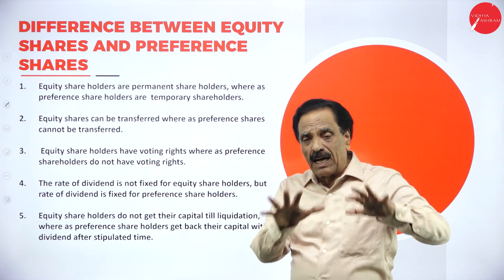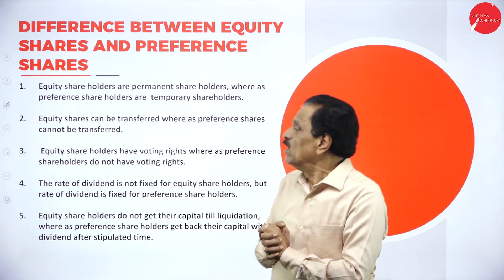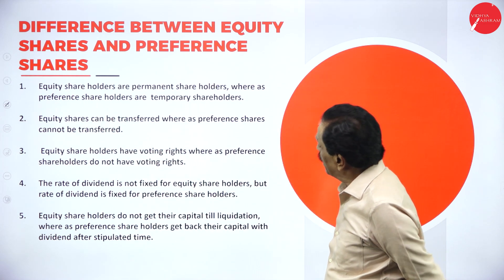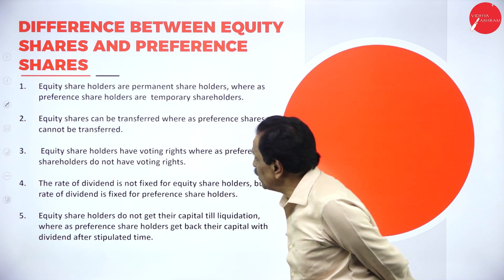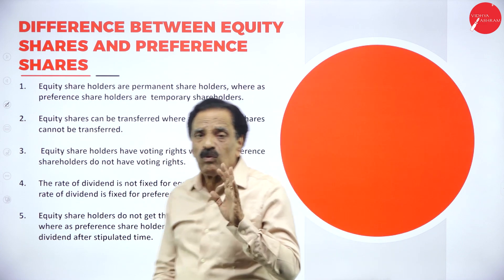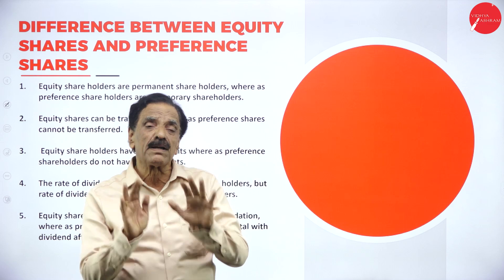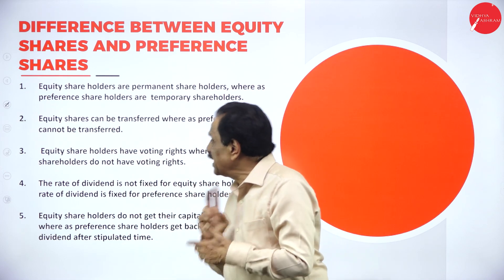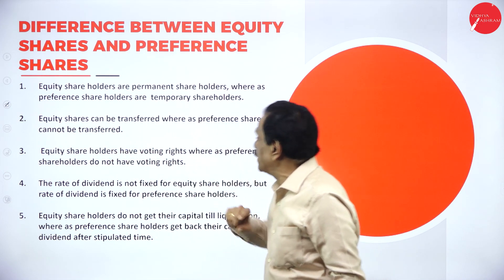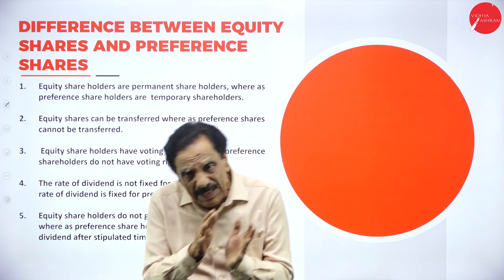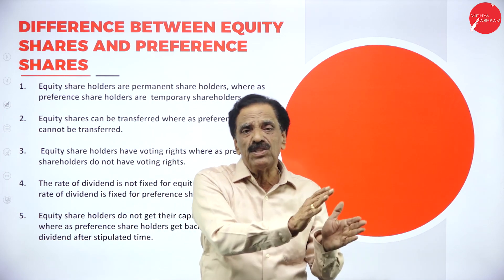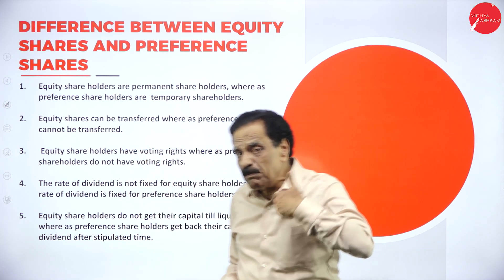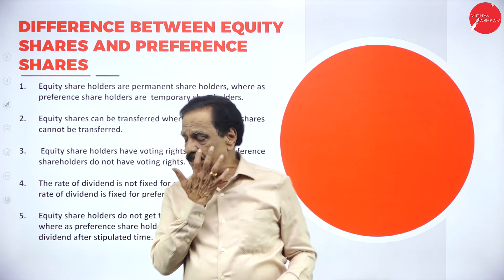Now, the differences between equity share and preference share. First difference: equity shareholders are permanent shareholders, whereas preference shareholders are temporary shareholders. Second difference: equity shares can be transferred from one shareholder to another shareholder, but preference shares cannot be transferred — preference shareholders get their money paid back after a stipulated time.